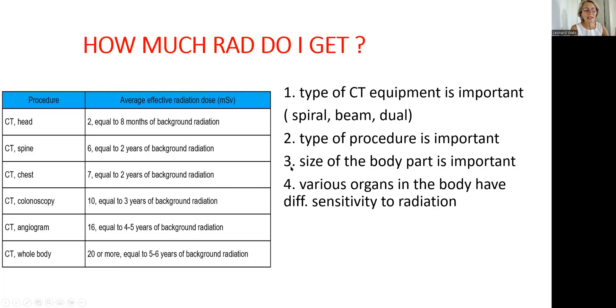Why 'more'? That's explained by number three: the size of the body and how many slices need to be made in order to look inside that organ. Let me show you an example. You are looking at this apple, which represents the organ. Suppose the organ is small and you need to make only three slices in order to look inside — one, two, and three. So a person gets that much radiation. However, you can see that each slice may be too thick to look inside.